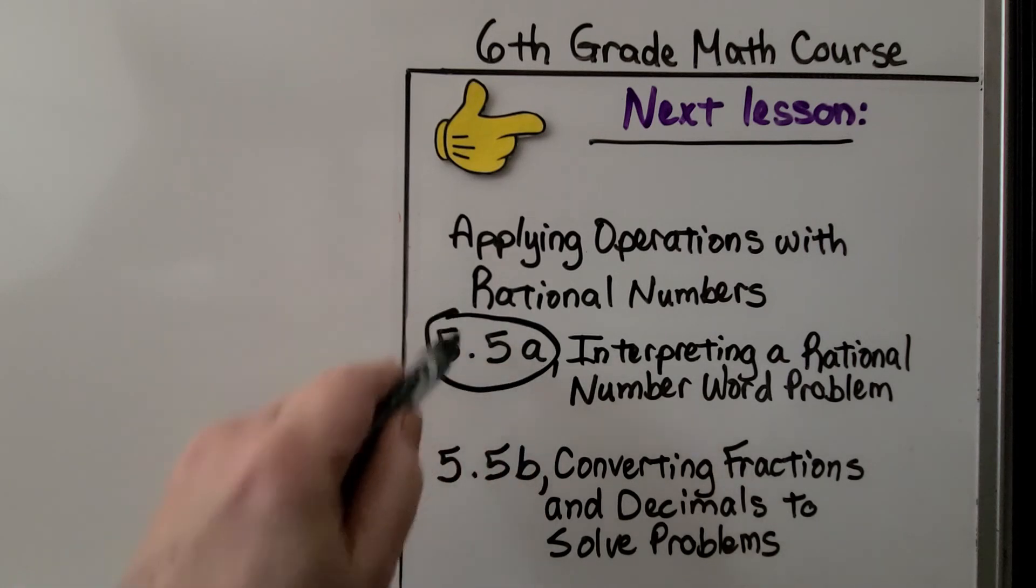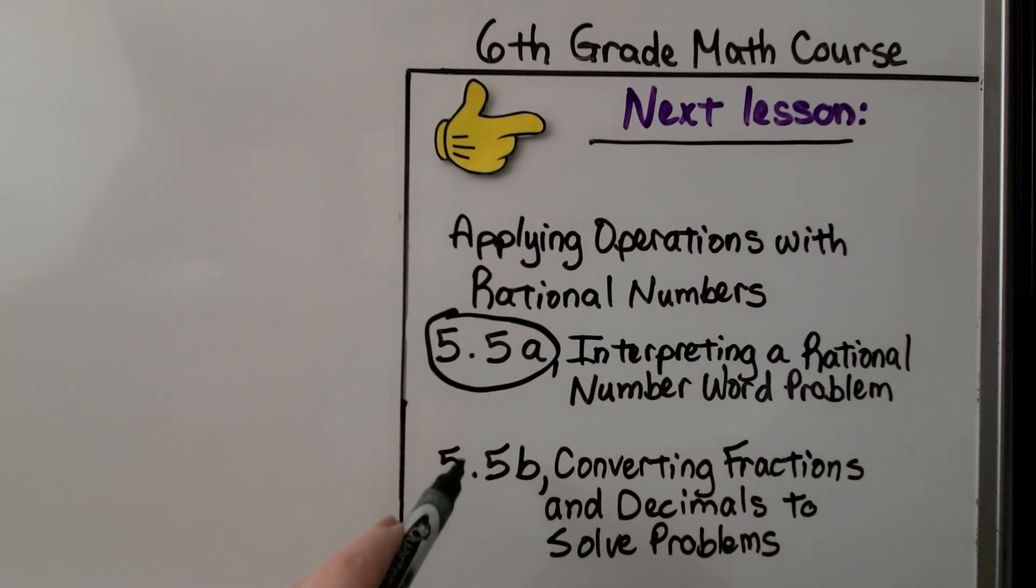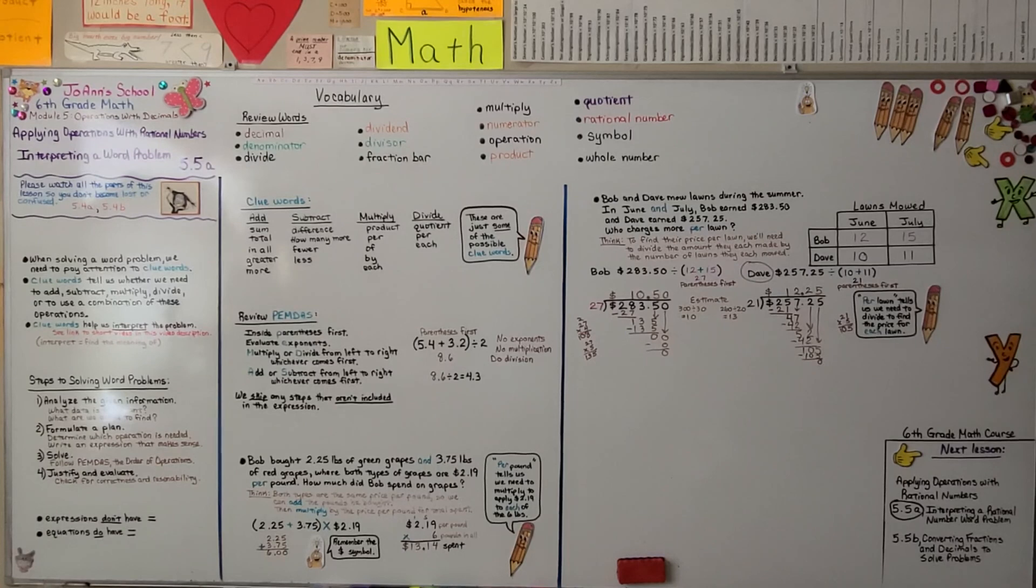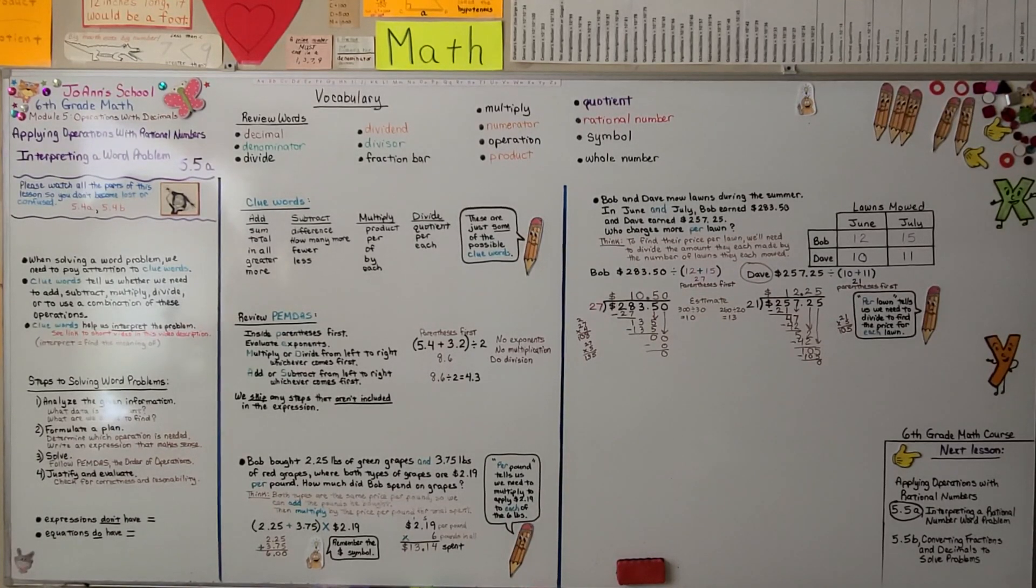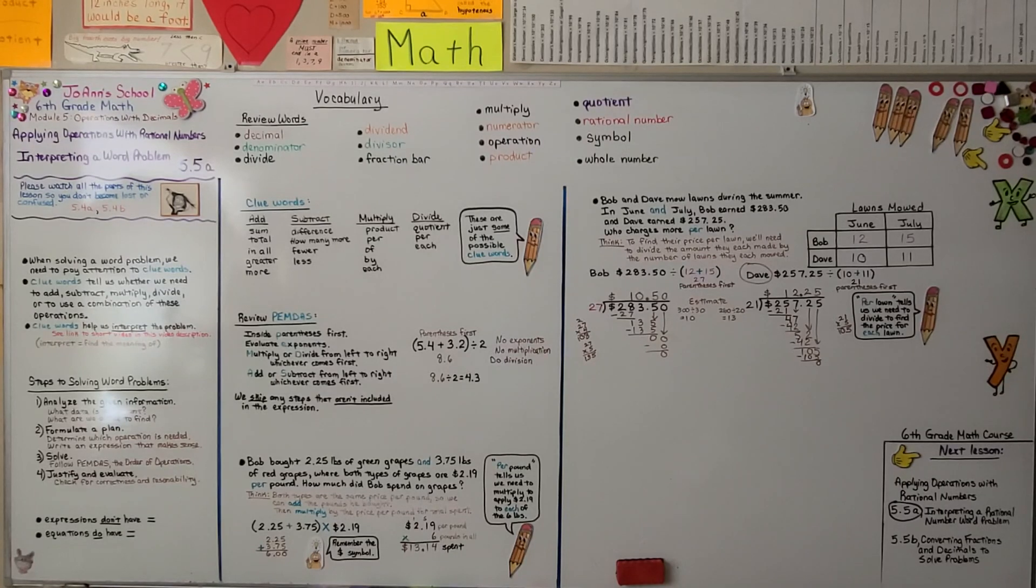So, we finish this lesson. We're going to move on to the second part of 5.5. We're going to talk about converting fractions and decimals to solve problems. When a word problem contains both fractions and decimals, we need to change them to either all fractions or to all decimals. And we'll talk about that in the next lesson. Have a great day. Keep doing your best. I'm proud of you for watching math videos and I'll see you next time. Bye.